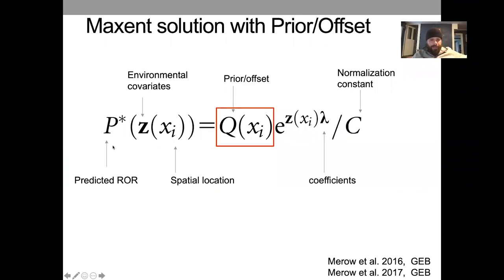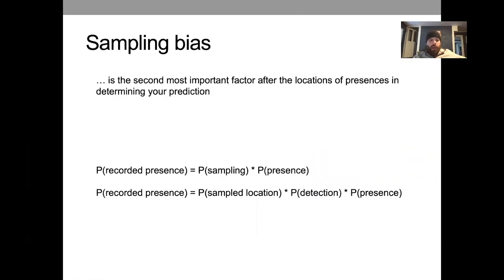You might remember this from before, our predicted relative occurrence rate as a function of environmental covariates is related to the environmental covariate vector times the coefficients, some constant that makes this relative occurrence rate sum to one, and then there was this part about the prior that we skipped. In the first part, we discussed how the Maxent assumption is that we are assuming a priori that species is equally likely to be everywhere, which means that our prior best guess corresponds to a uniform function across geographic space. This function Q here is just a constant, so it doesn't actually affect our predictions. But there might be reasons that we want to capture variation in different priori assumptions.